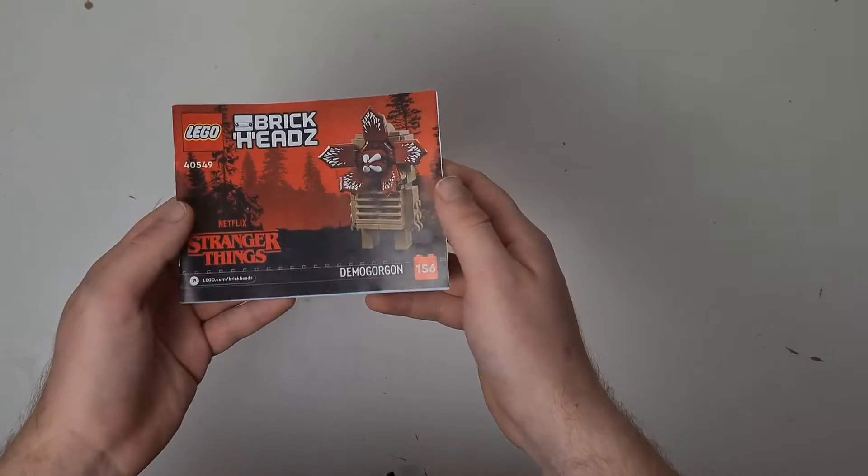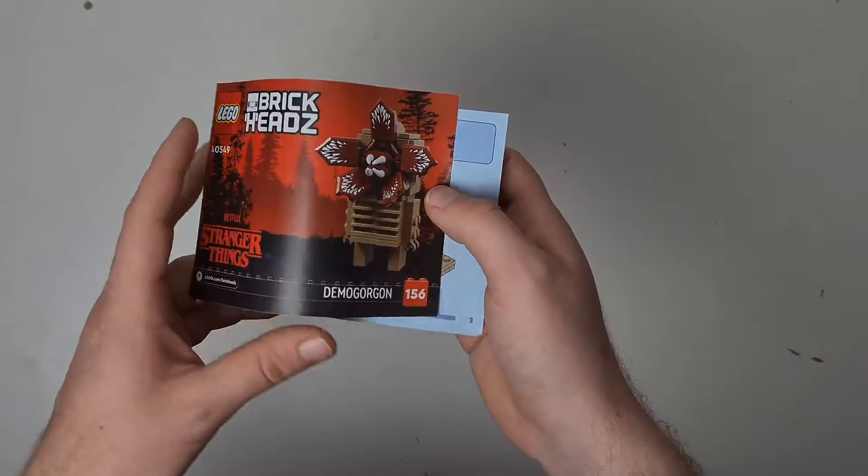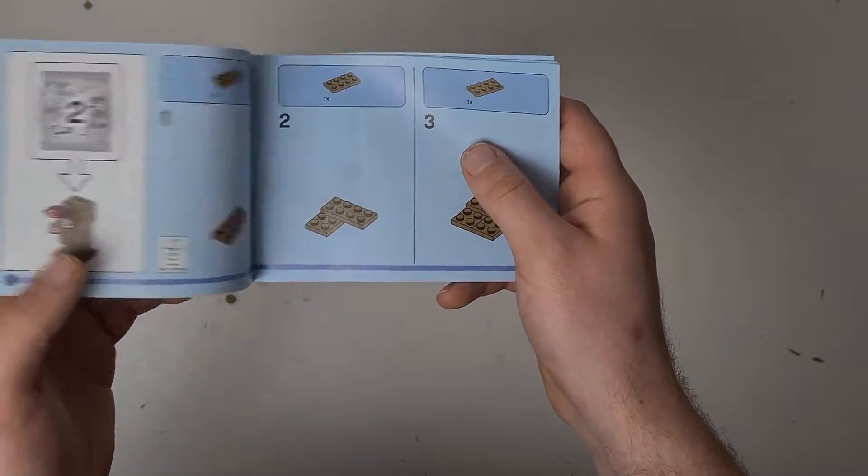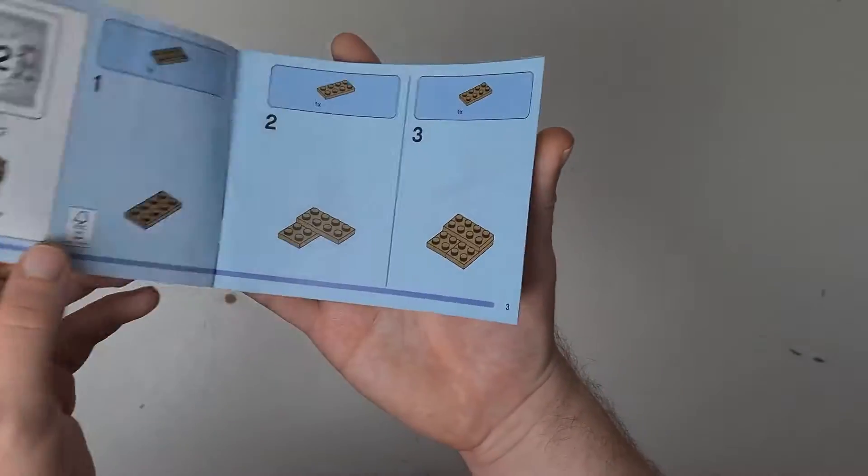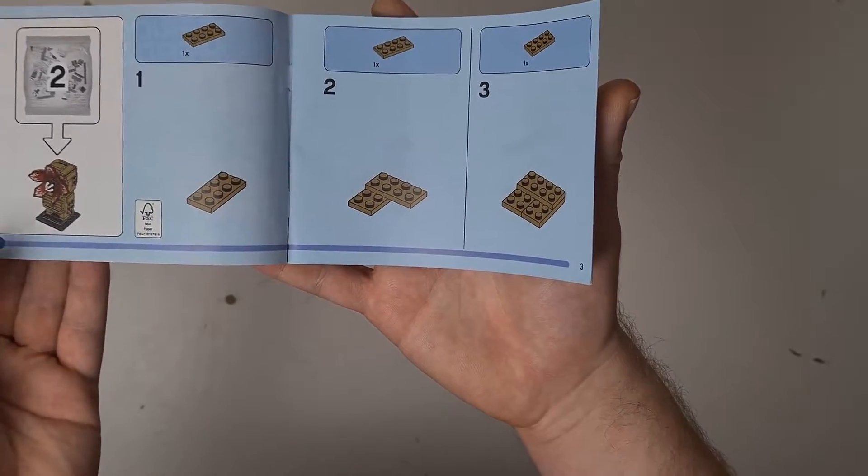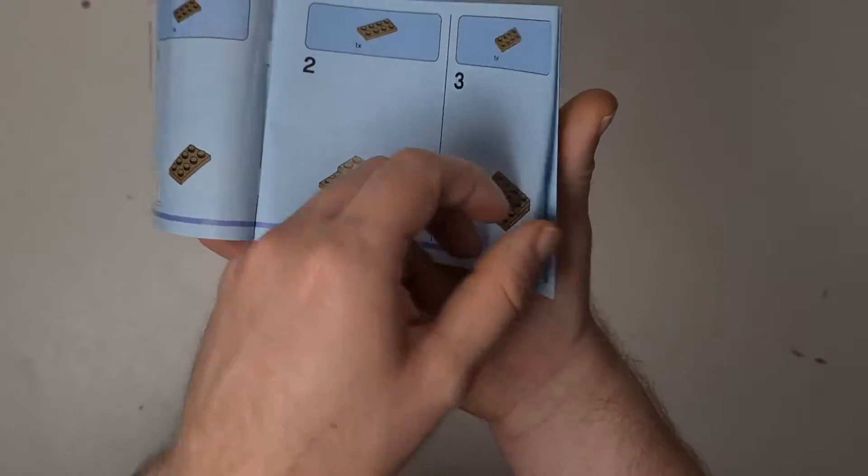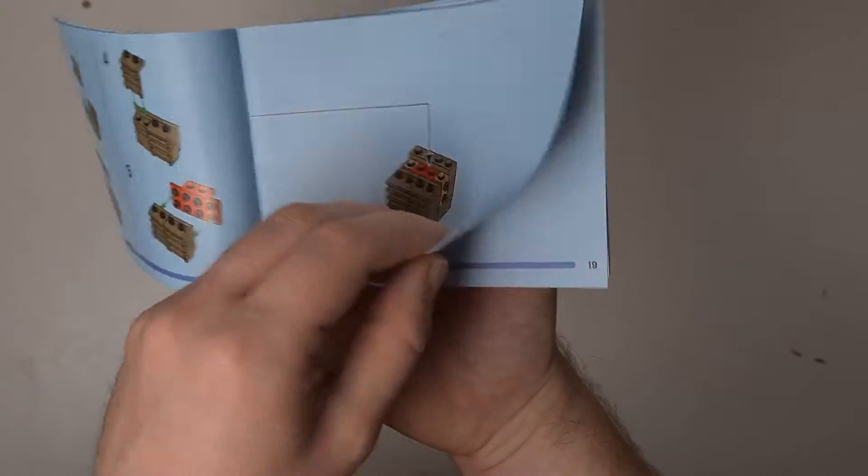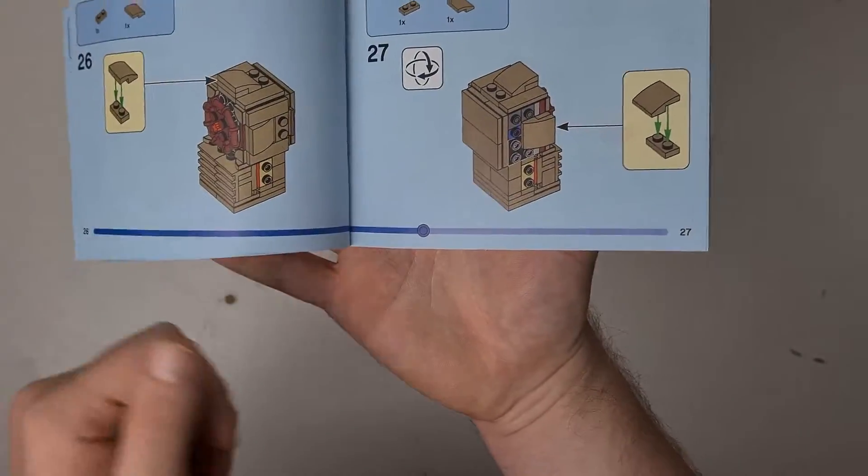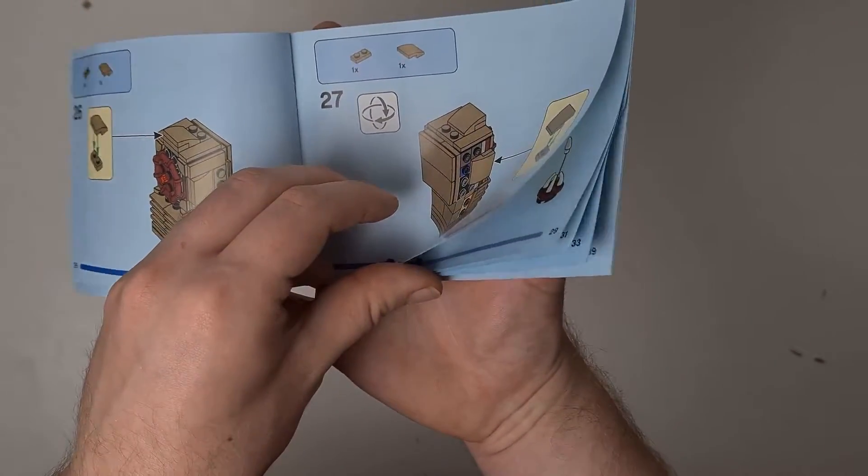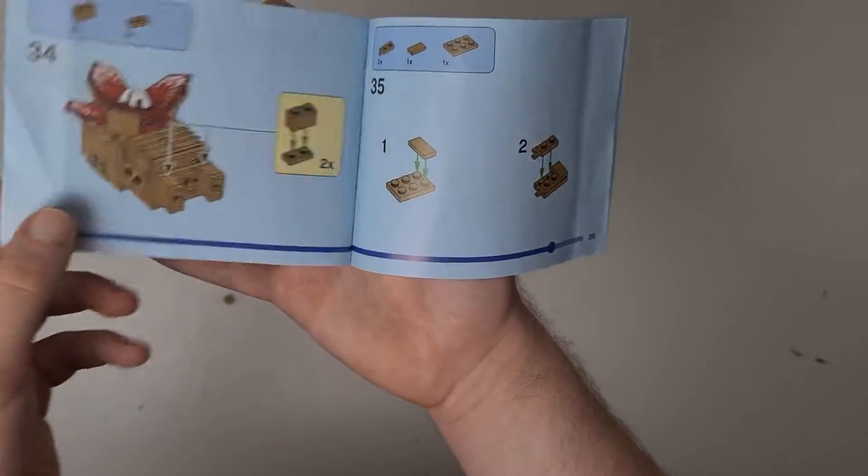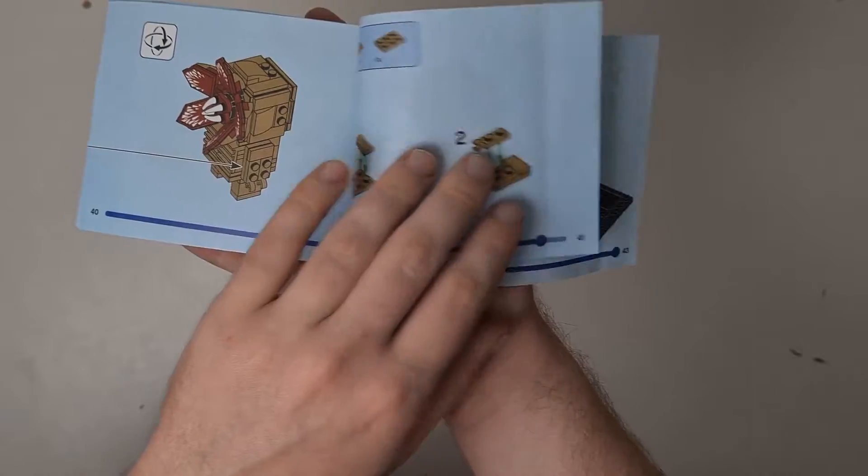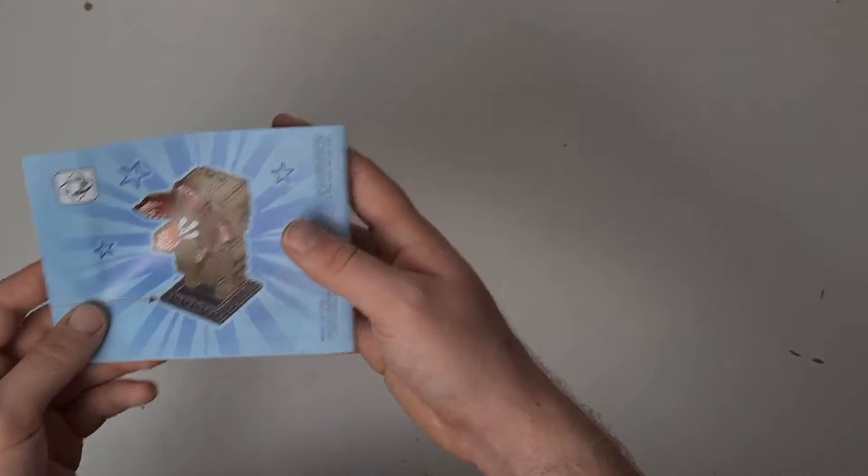So this set comes with two manuals. Each brickhead has a different manual and there's nothing too special about them. They've got the new progress bar at the bottom that shows you how far you are along. They're quite easy to understand. Some Lego sets I know can be quite difficult, but there's nothing overly difficult about these. They're quite plain and simple really.